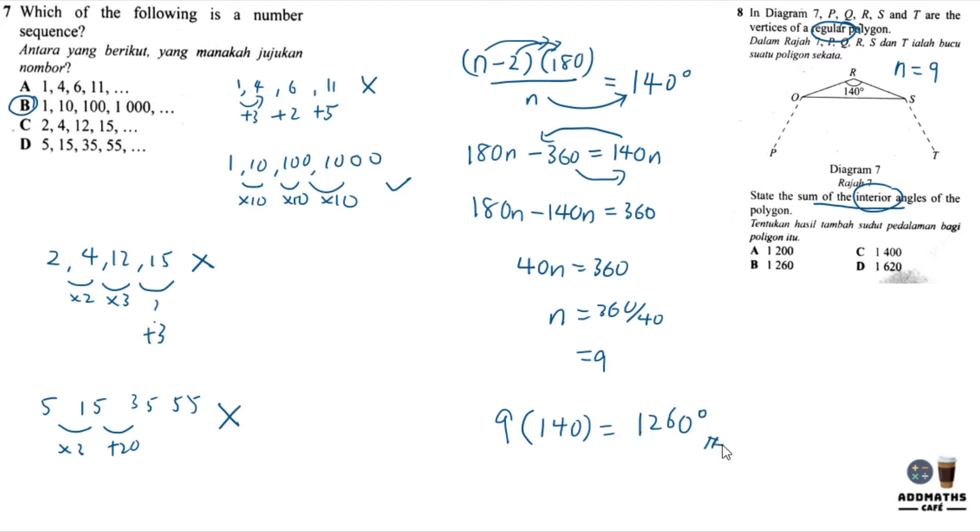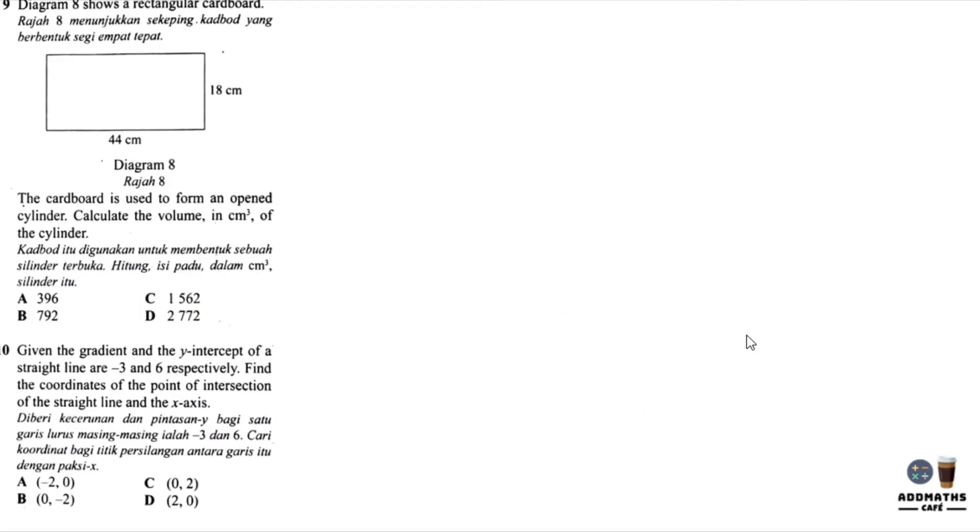For Question 9, you are required to find the volume of this rectangular cardboard. This rectangular cardboard is used to form an open cylinder. So this cardboard is then rolled to form a cylinder. Calculate the volume. Let's say this is folded this way, and you will form this cylinder with the height of 18 cm and radius unknown.